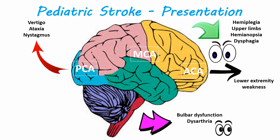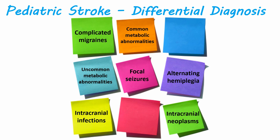The differential diagnosis is also broad in these patients. We can often see metabolic abnormalities, both common and uncommon, including hypoglycemia and MELAS syndrome. Complicated migraines could be a possible etiology. You could have alternating hemiplegia, which is a half-body deficit that usually recurs over hours to days, as well as intracranial infections and neoplasms.